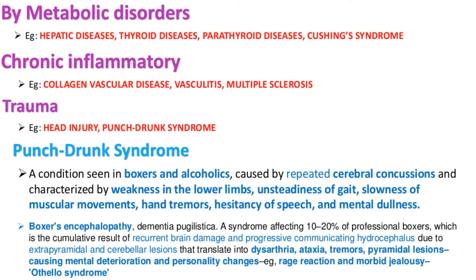Metabolic disorders such as hepatic diseases, thyroid diseases, parathyroid diseases, and Cushing's syndrome can also cause dementia. Chronic inflammatory causes include collagen vascular diseases, vasculitis, and multiple sclerosis. Trauma such as head injury and punch drunk syndrome can also cause dementia. Punch drunk syndrome, seen in boxers, is caused by repeated cerebral concussions and is characterized by weakness in the lower limbs, unsteadiness of gait, slowness of muscular movements, head tremors, hesitancy of speech, and mental dullness — also known as boxers' encephalopathy or dementia pugilistica, affecting 10–20% of professional boxers due to cumulative recurrent brain damage.